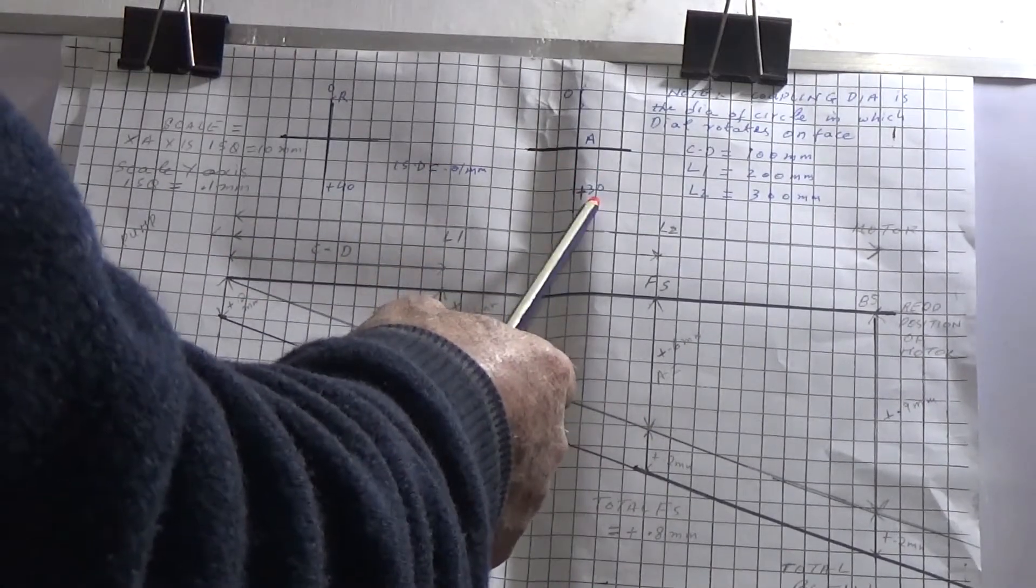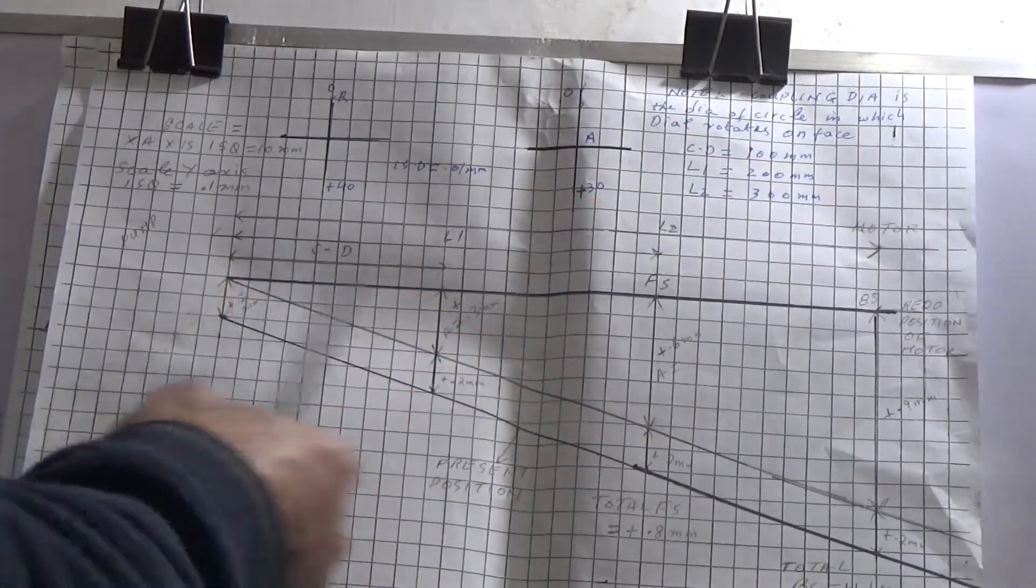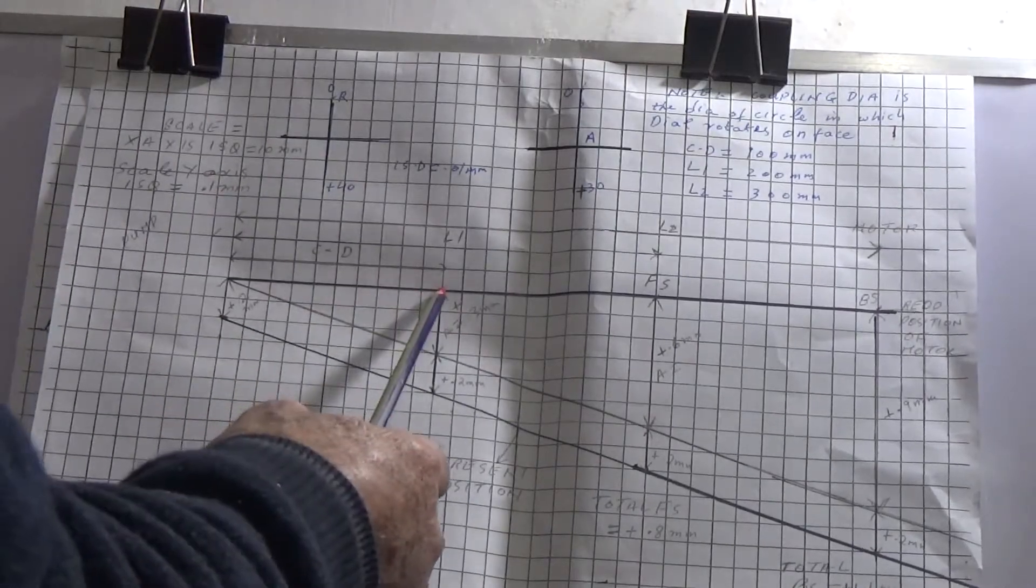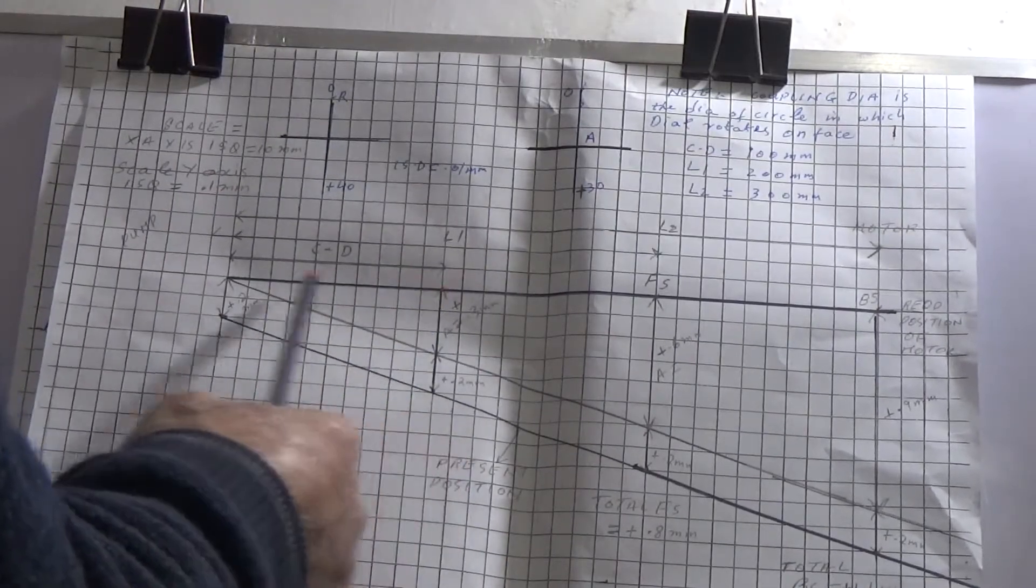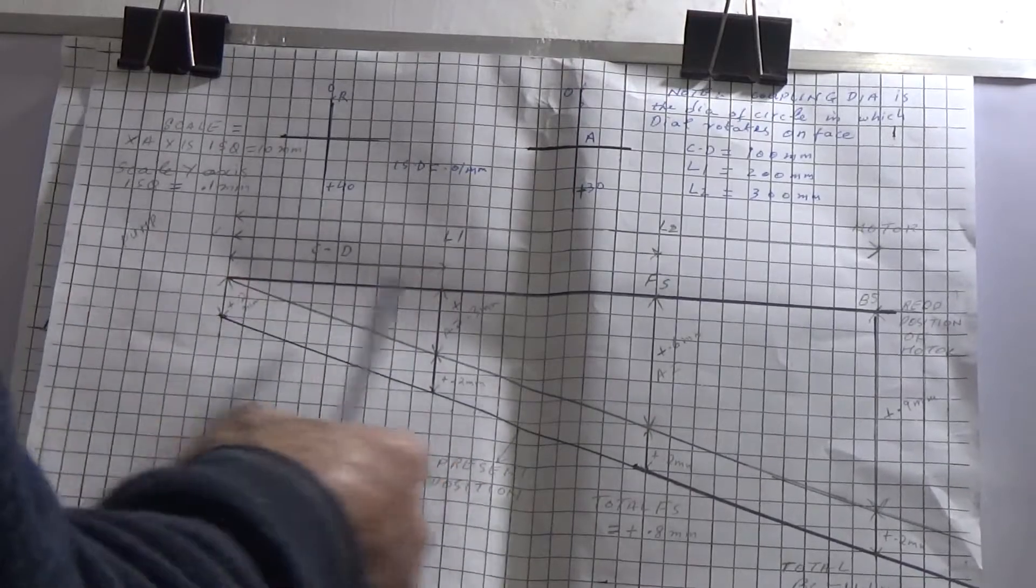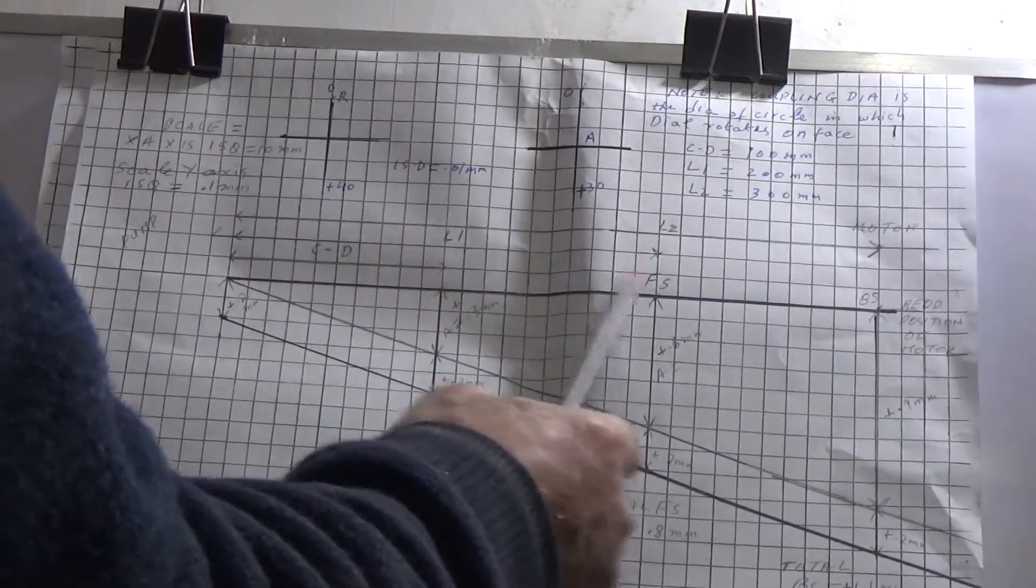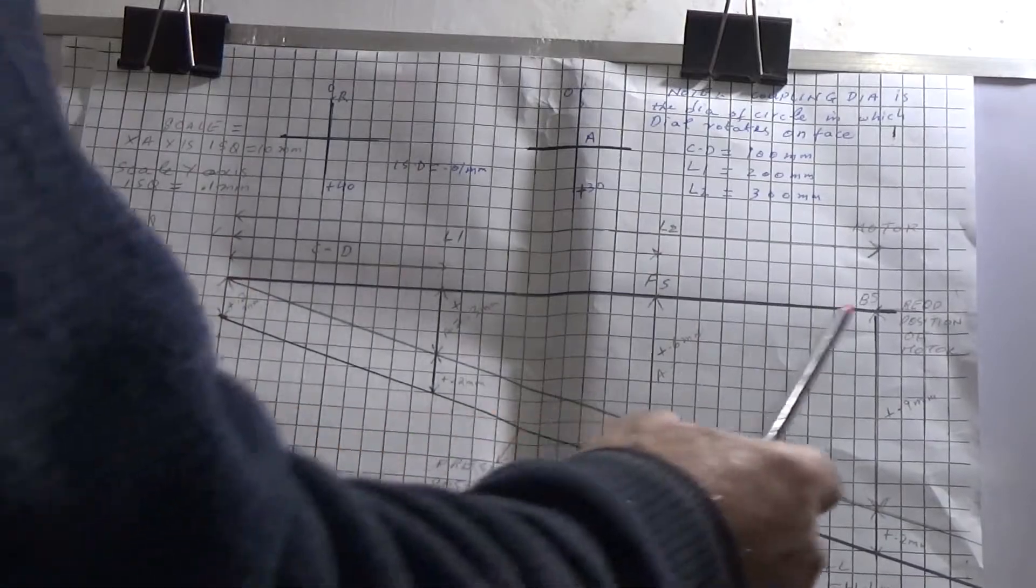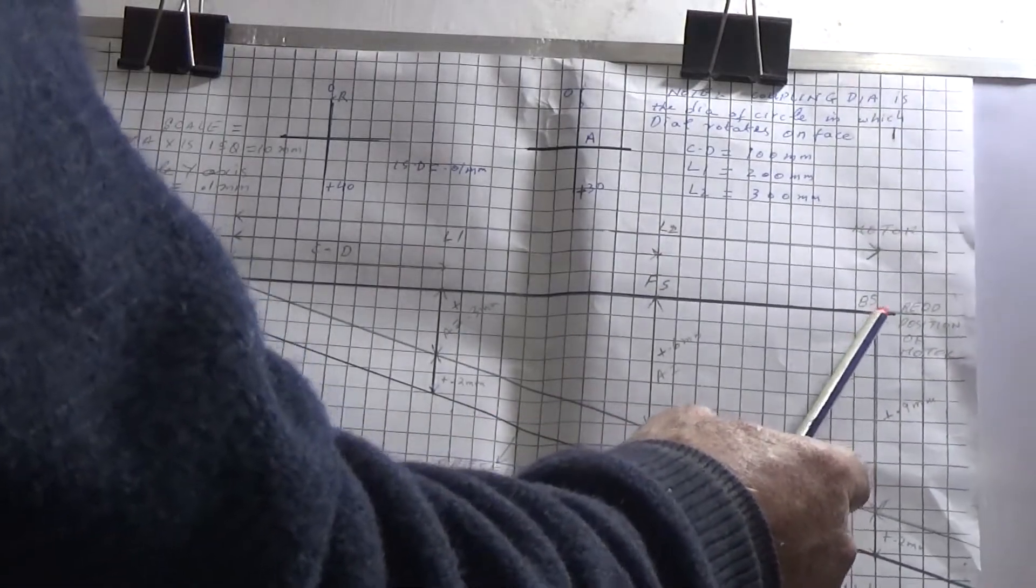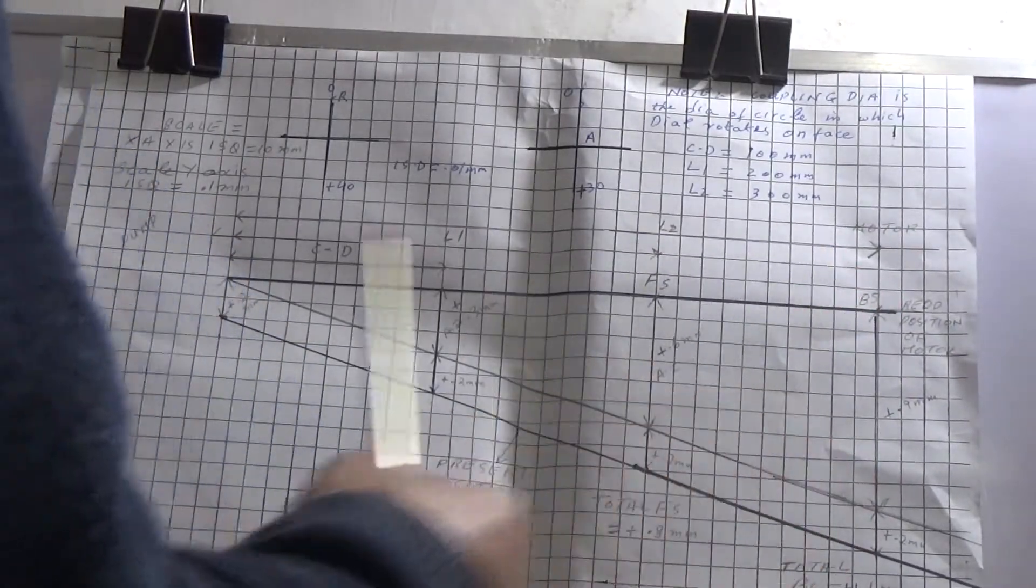So your angular reading becomes, this is your, of course I will tell you. So from here to here will be your coupling diameter. These are 10 scales, so it becomes 100mm. From here to here is 200mm, these are 20 scales. And from here to here is 30 scales, that is equal to 300mm.